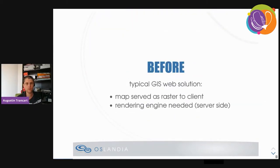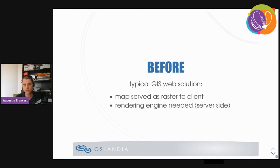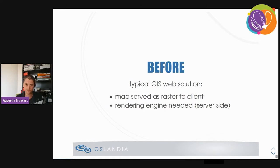Historically, when we wanted to do a web GIS application, we had limited choices. Maps were served as images. On the server side, we had, for example, a QGIS server, a map server, or a GeoServer. They acted as a rendering engine and did all the heavy lifting of transforming vector data into raster images. These rasters would get sent to the front end, and then we would use OpenLayers or Leaflet to display these images, and eventually an applicative backend for other needs.